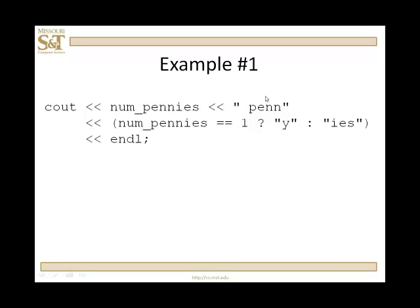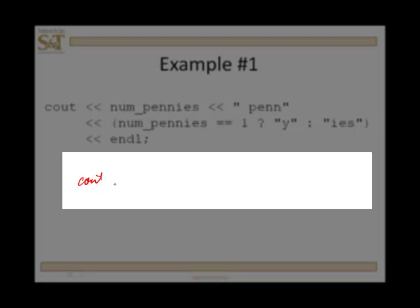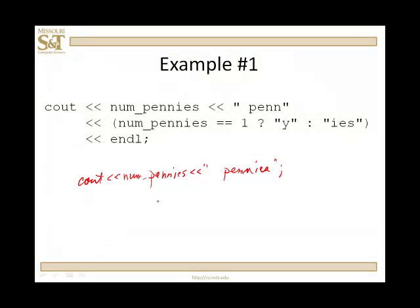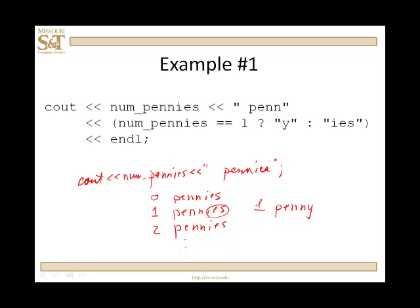Here's an example from a program I assigned many years ago. The program was to calculate change and output that to the user. I had my output statement with cout and num_pennies — the variable holding the number of pennies — followed by the word 'pennies'. The problem was that if num_pennies was one, it would output 'one pennies', which looked silly. It really should have been 'one penny'. One way to handle this is with a complicated if statement, but that seemed cumbersome.